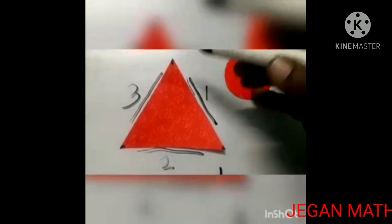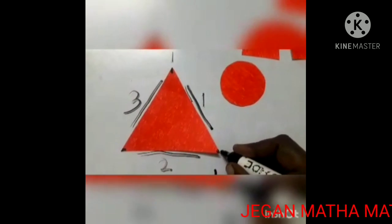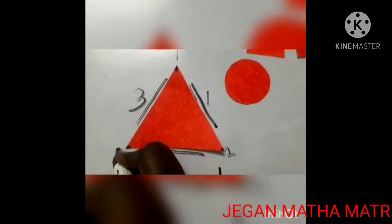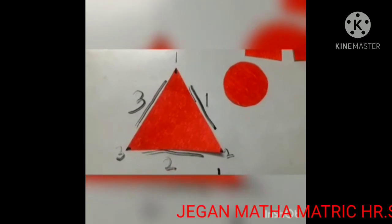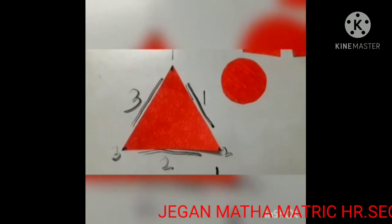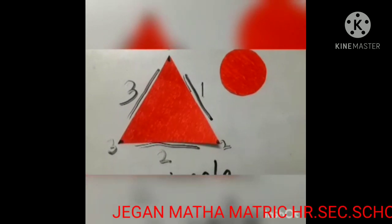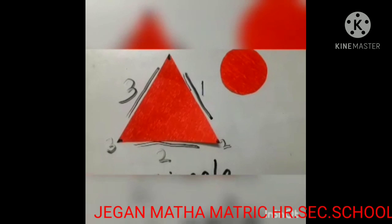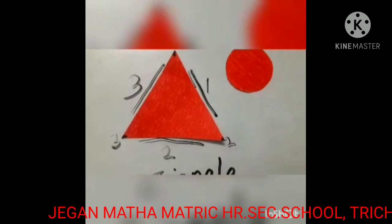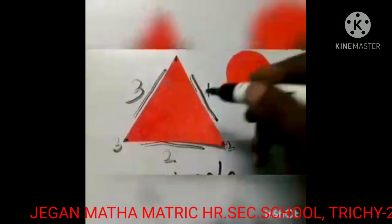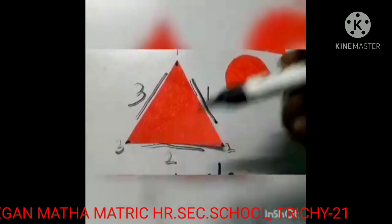How many corners? Three corners. One, two, three. How many corners? Three corners. So it has three sides and three corners. Triangle is a shape that has three sides and three corners.